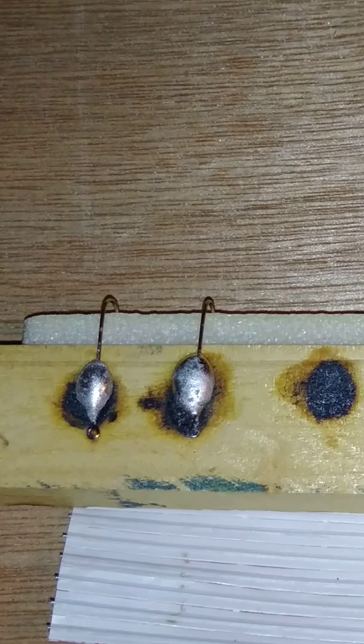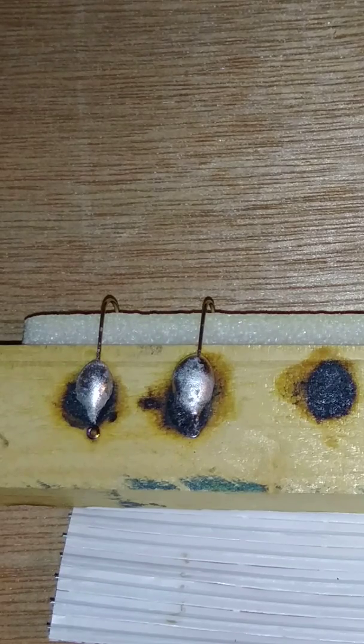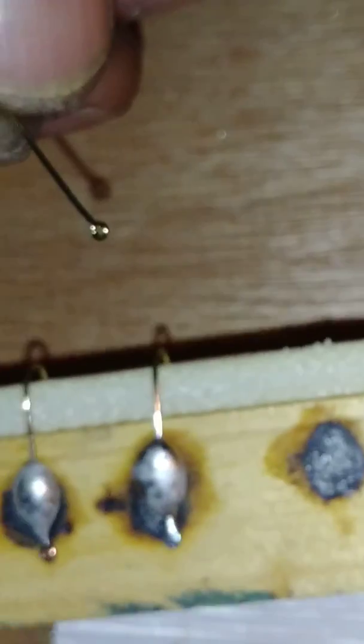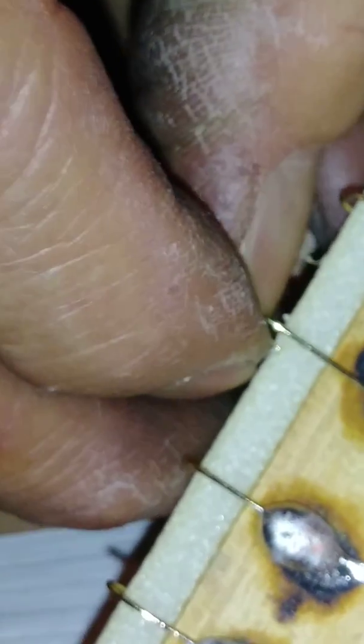Solder sticks to them really well. Anyway, I made this little board up. It's not very big. I got some foam on the edge here, you don't want to damage the tips of your hooks. So all you have to do is lay your hook flat onto the wood first.